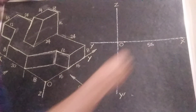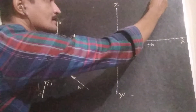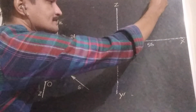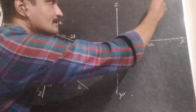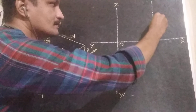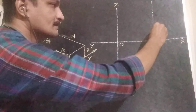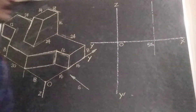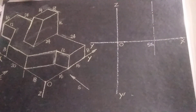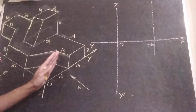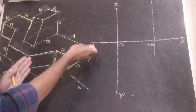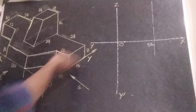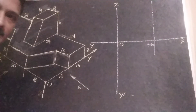We can draw a construction line at the middle of the x-coordinate, because the entire object is symmetric about this y-axis.